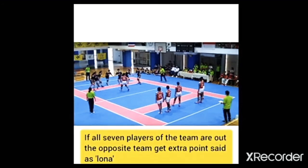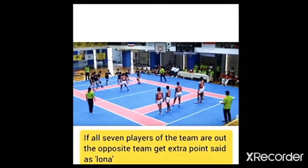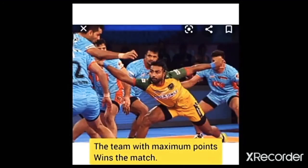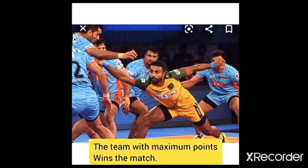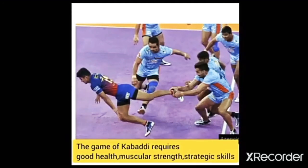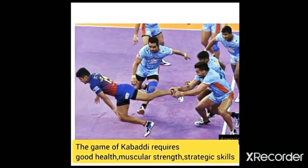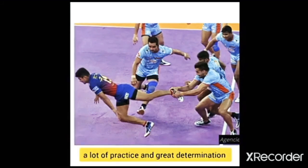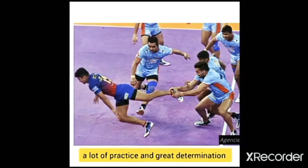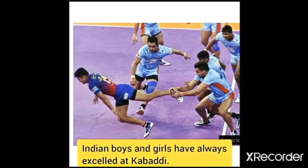The raider tries to tag the opponents and run back to his side. The opposing team tries to catch the raider and stop him from going back to his half until he loses his breath. If the raider manages to go back successfully, all the persons he tagged and all those who touched him are declared out. For each player declared out, the opposite team scores a point. If all seven players in a team are out, the opposite team gets bonus points known as Lona.